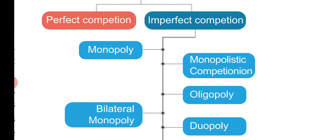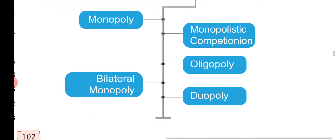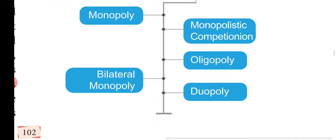Imperfect competition includes the topics of monopoly, monopolistic competition, oligopoly, duopoly, and bilateral monopoly.